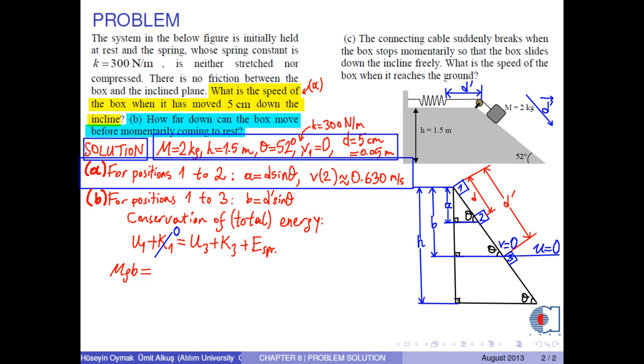The potential energy of the box at point 3 is zero. Its kinetic energy is also zero because it is momentarily at rest at this point. Finally, we have the spring energy at this point as 1 half K times D prime squared, since the change in the length of the spring is D prime.